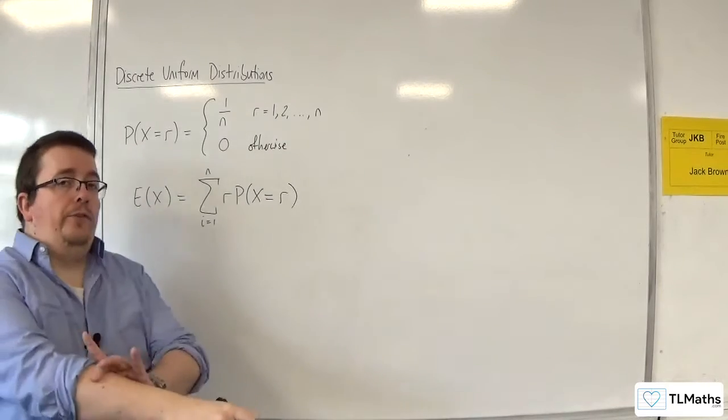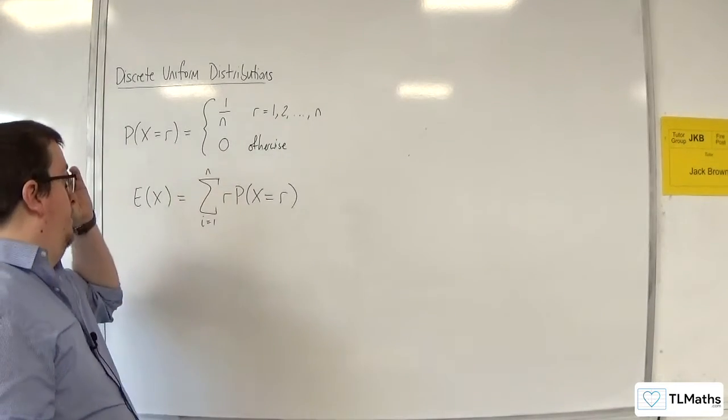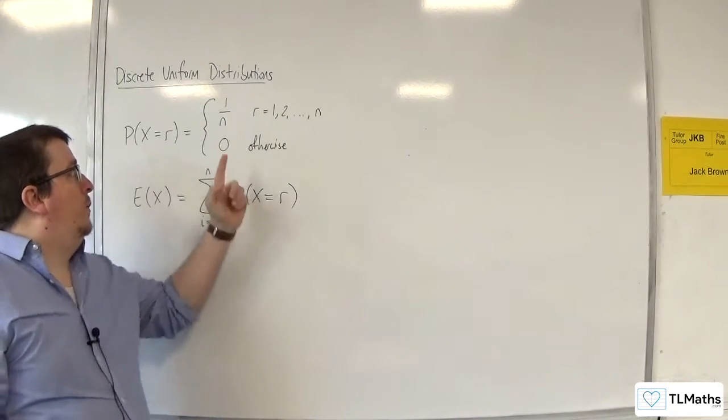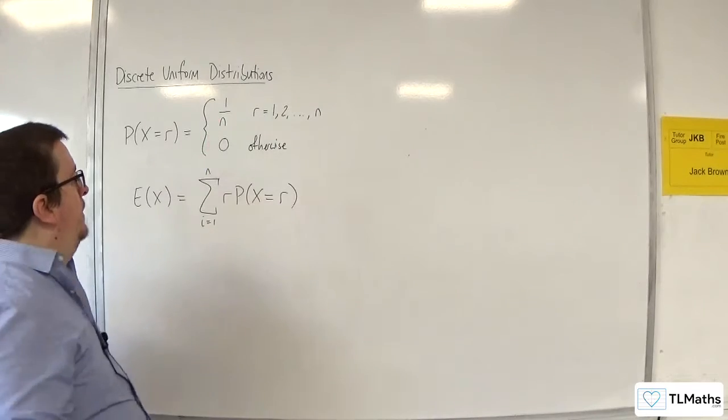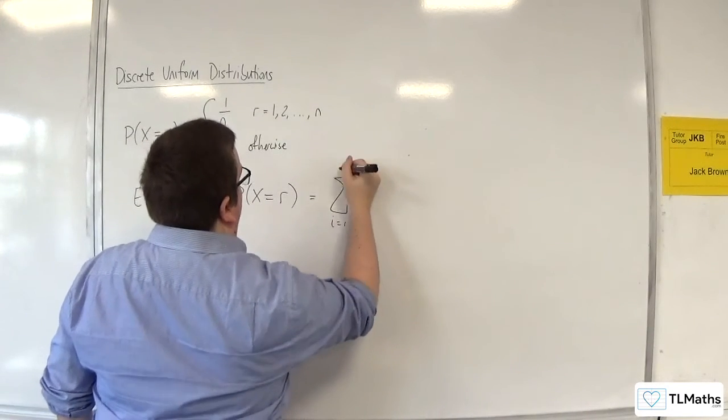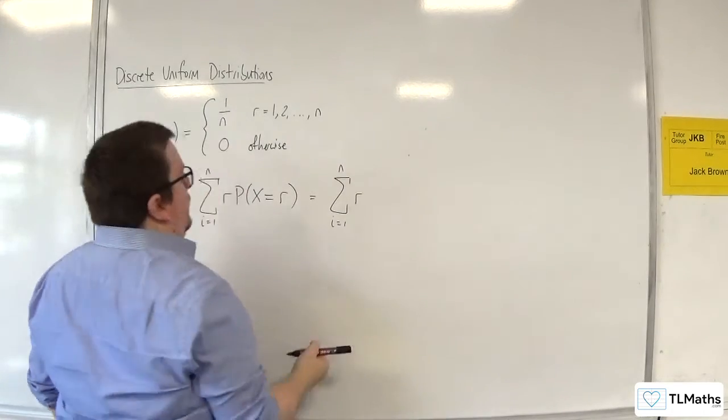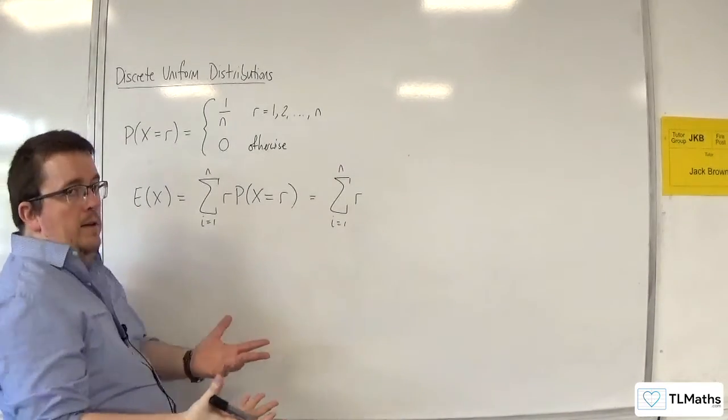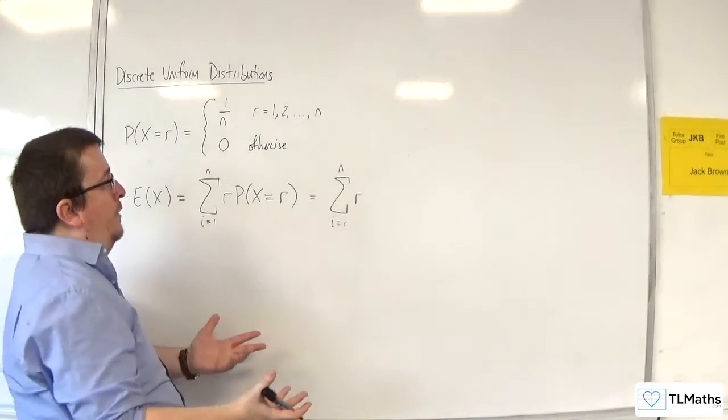Now, because it's a uniform distribution, the probability of x being equal to r will always be 1 over n. So, this is going to be the sum from i equals 1 to n of r times each of my probabilities, which is 1 over n.